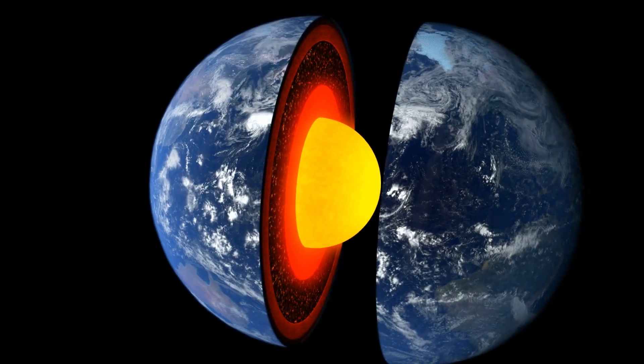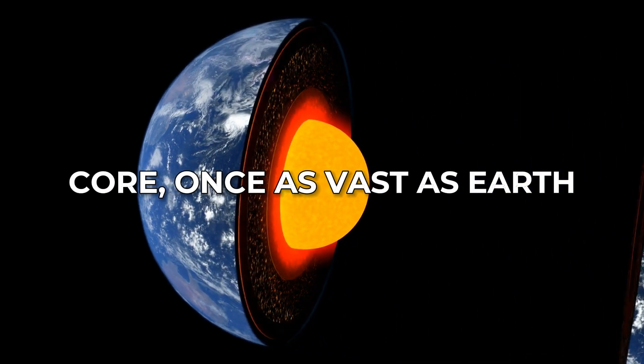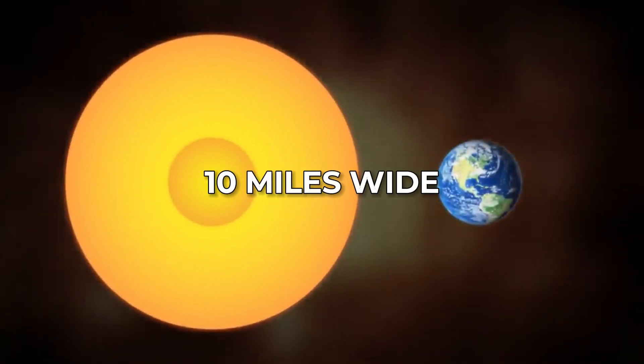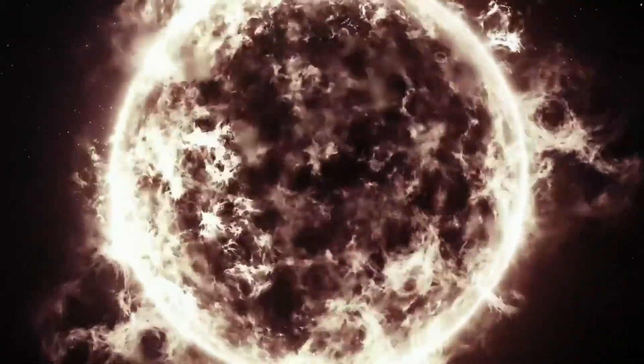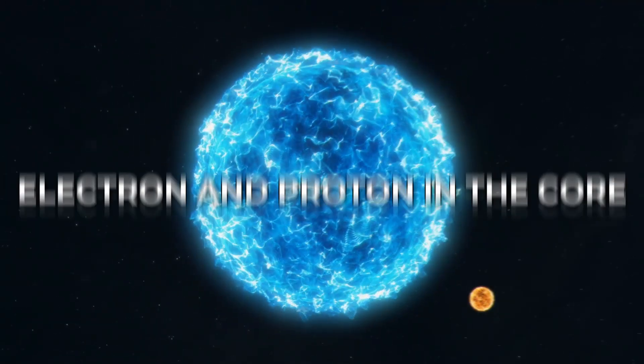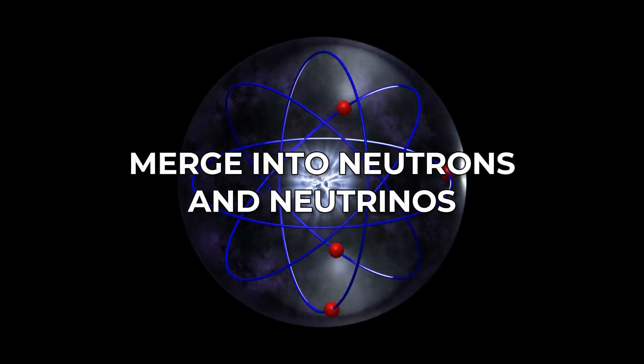In a blink, the core, once as vast as Earth, squeezes down to just 10 miles wide. This happens because under extreme pressure and heat, electrons and protons in the core merge into neutrons and neutrinos.